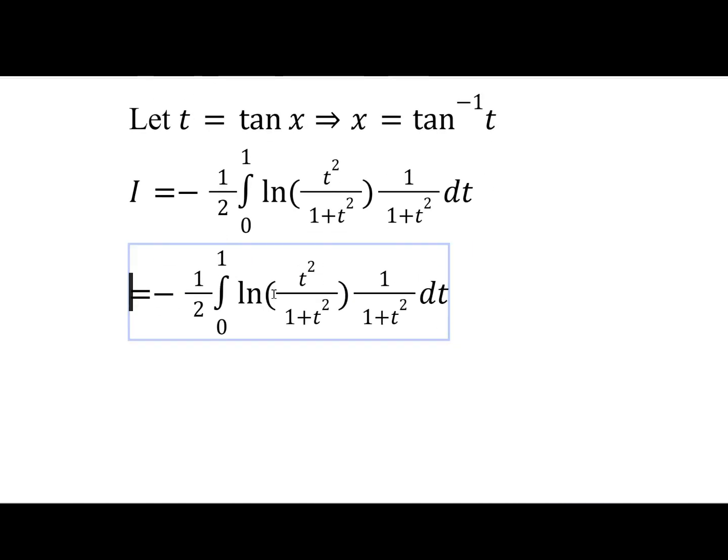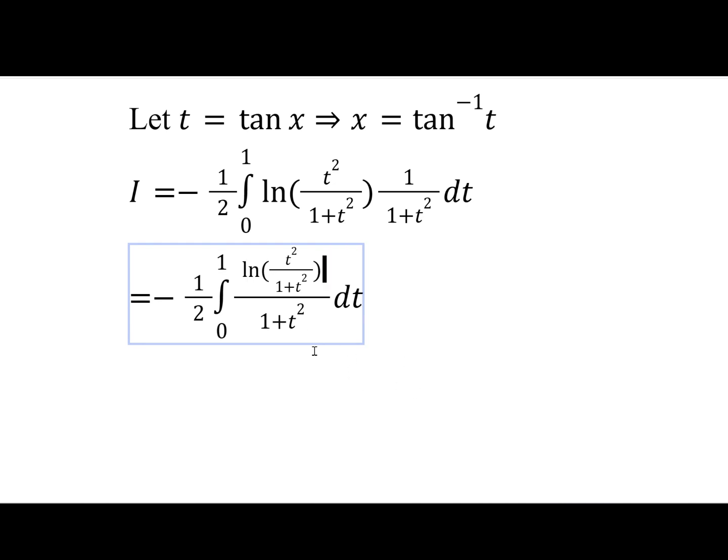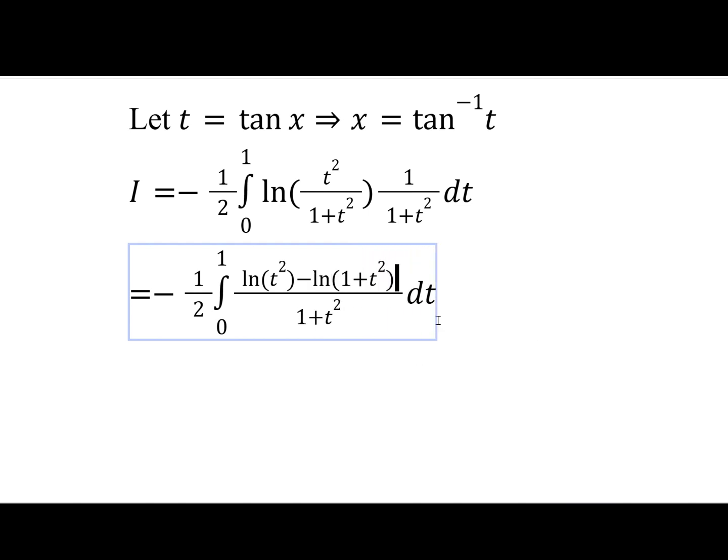So now we'll just put this log on the numerator, and we can split up the logarithm using log laws. So that would be log t squared minus log 1 plus t squared. And of course, we can take this 2 outside, giving us log t, but then multiplied by 2.